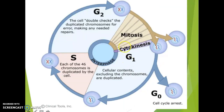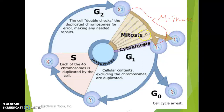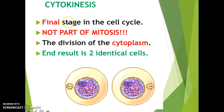That is mitosis — the M phase — and what we just talked about was the PMAT phases. The last stage is cytokinesis, which is the last part of the M phase. Keep in mind that cytokinesis is not part of mitosis — it is a separate part of the M phase. This is the final stage of the cell cycle, where the two cells separate. This is what we call the division of the cytoplasm.